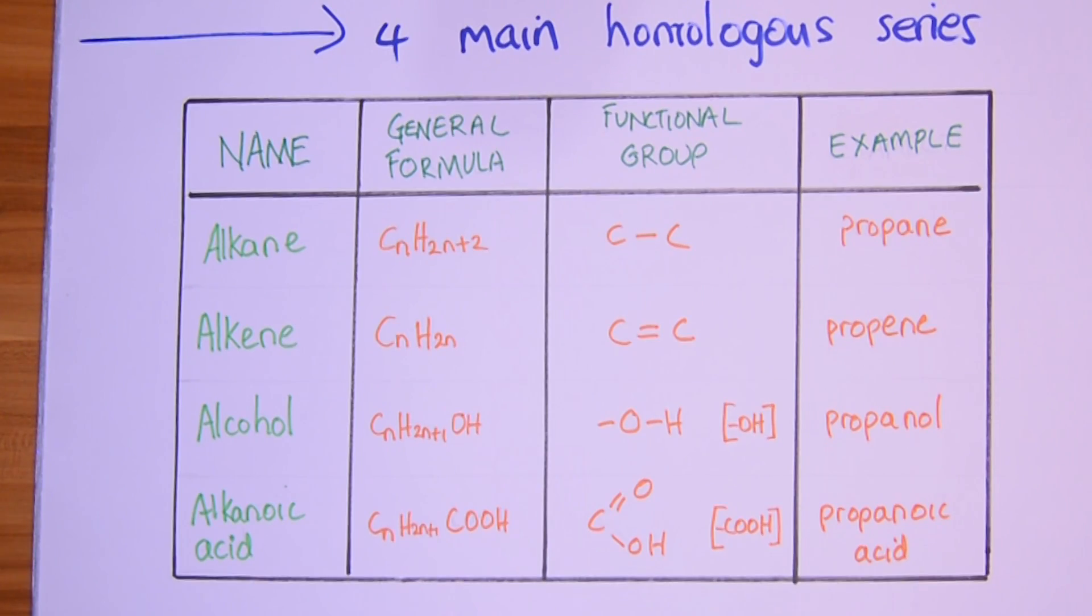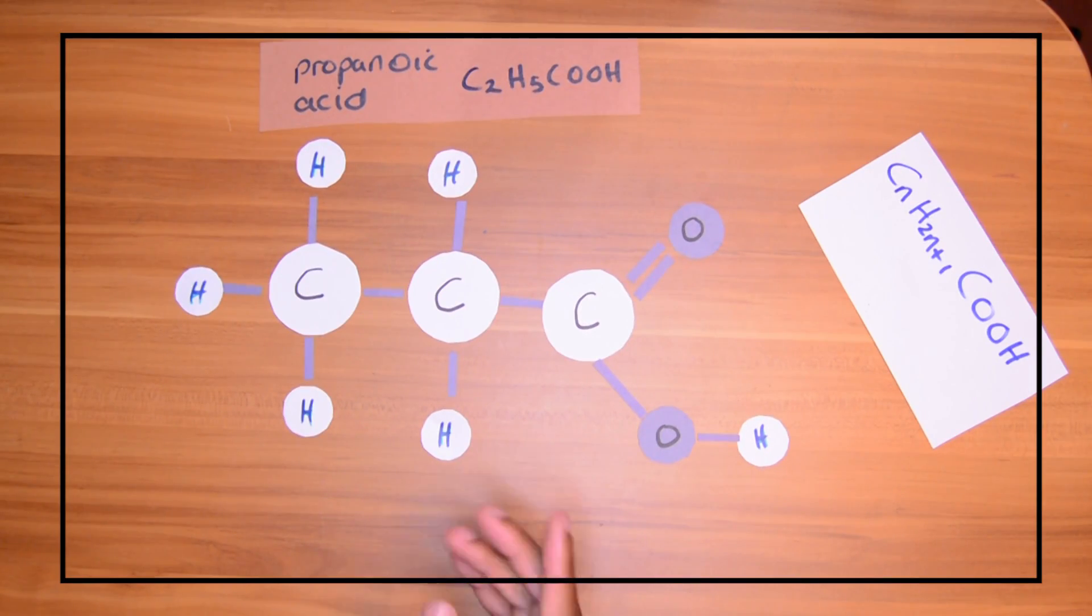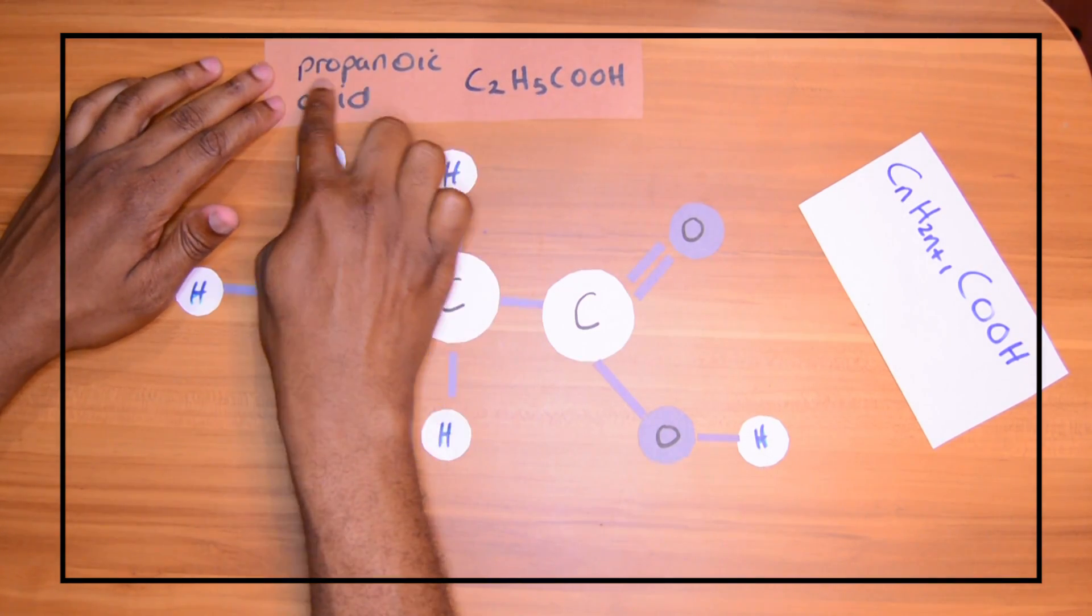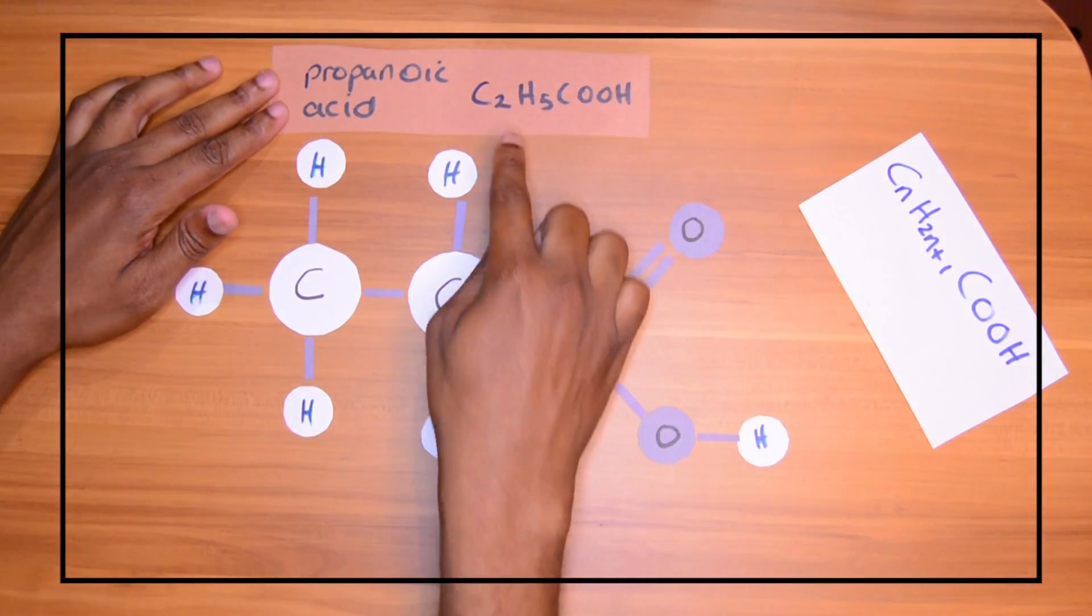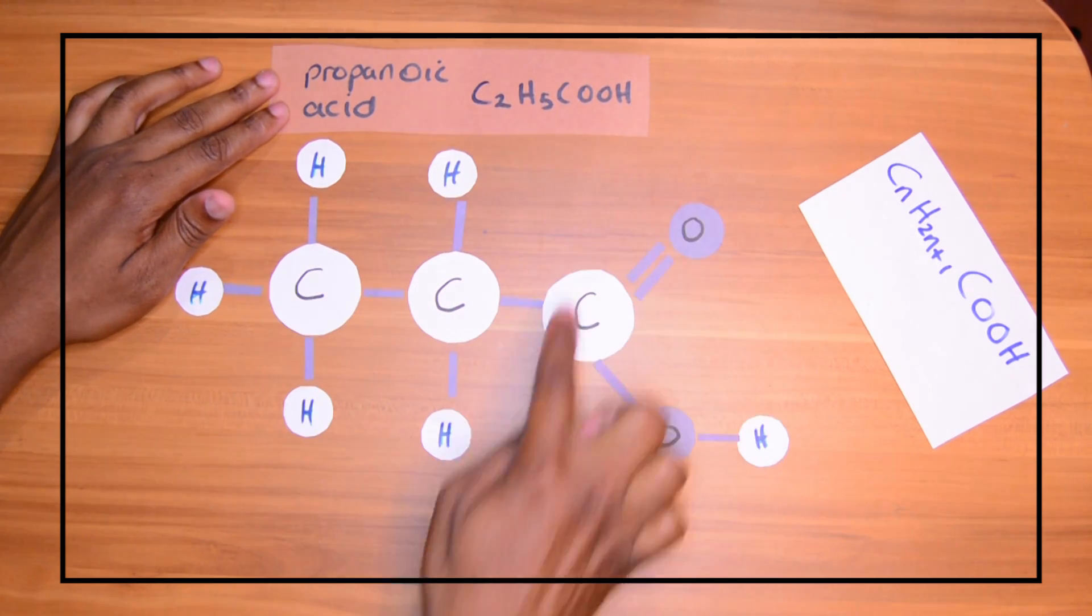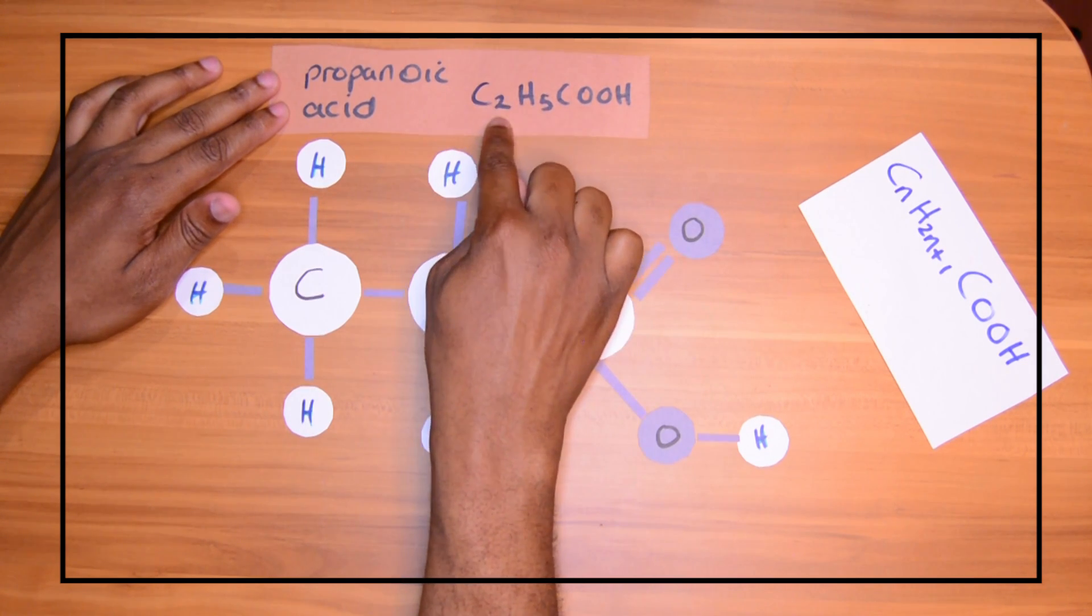Yeah, and we have propanoic acid. Now check this thing with acids here. When you're writing the formula, although propanoic acid has three carbons, when you're writing the formula, write one less. Write two. Why? Because one of the carbons is getting used up with the functional group COOH.